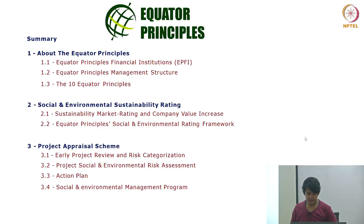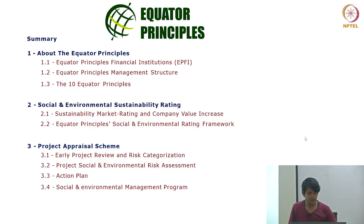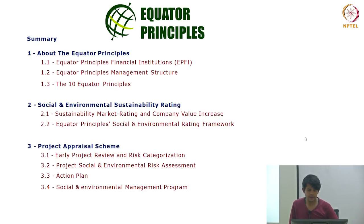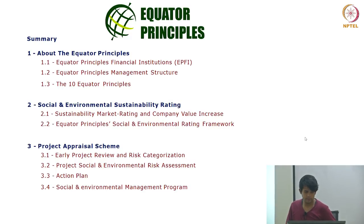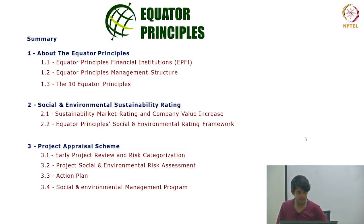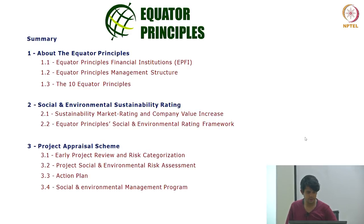The Equator Principles are a risk management framework adopted by financial institutions for determining, assessing, and managing the environmental and social risks in project finance. There are three main elements: the Equator Principle Financial Institutions, the Equator Principles management structure, and the ten Equator Principles themselves. Related areas include sustainability rating, company value increase, and a social and environmental rating framework covering project appraisal, early project review, risk categorization, social and environmental risk assessment, action plans, and social environmental management programs.